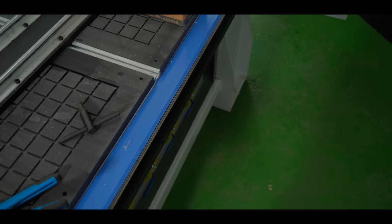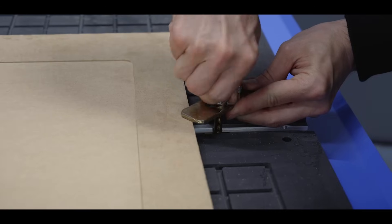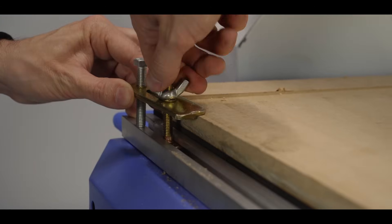This table has a T-slot slatted cover. Also, we have a vacuum function installed here, so it's easier to place materials on the table. The vacuum holds them securely.